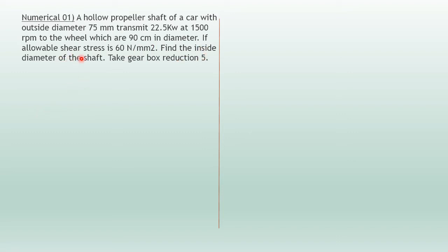The allowable shear stress is 60 N/mm². Find the inside diameter of the shaft. Take gearbox reduction as 5. So what they want us to find out is the inside diameter of the shaft.